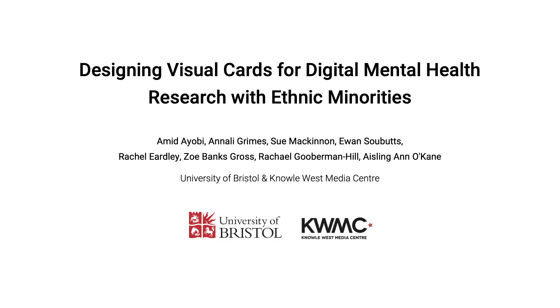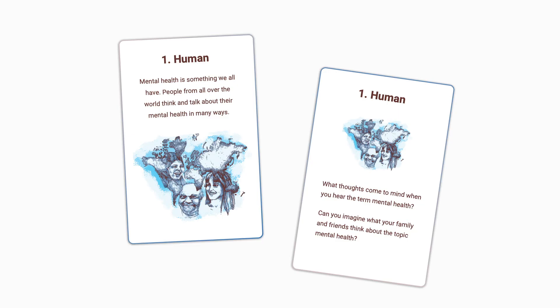Let me show you a set of visual cards. You can see that the visual cards are composed of different parts: a description, an illustration, and open-ended questions to foster mental health conversations. The first pair of the visual cards intends to acknowledge cultural differences. It says mental health is something we all have. People from all over the world think and talk about their mental health in many ways. To understand people's mental health views, we can ask: what thoughts come to mind when you hear the term mental health?